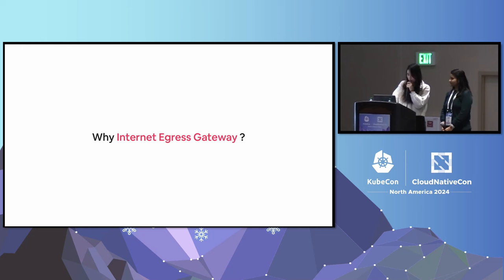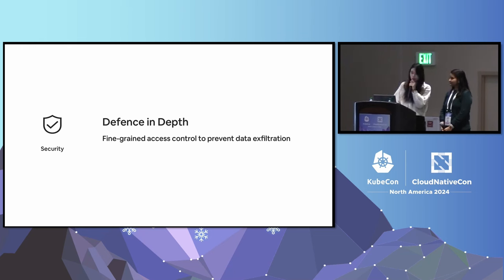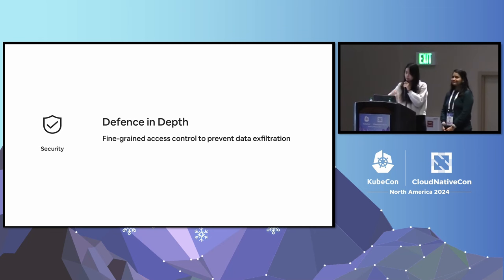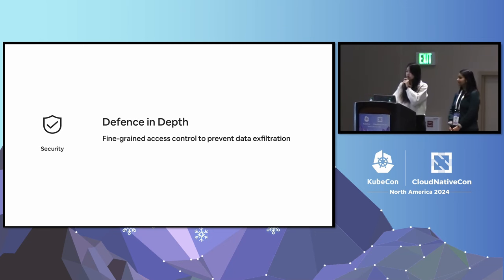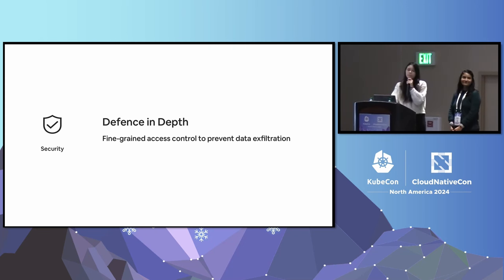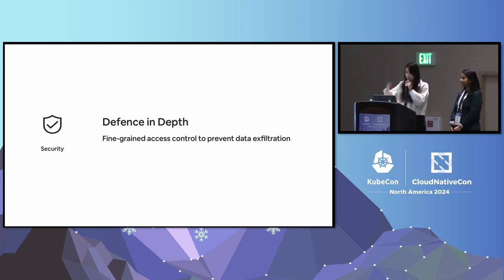Why do we need an internet egress gateway? The first reason is security. When people think about network security, we often emphasize the ingress side, but securing traffic leaving your system is also very important. For example, if we encounter vulnerabilities like log4j, you don't want attackers to exfiltrate sensitive data to malicious websites. To follow the best practice of defense-in-depth, we have multiple layers of control from traffic entering to leaving our system — building up an egress gateway helps prevent arbitrary access to the public internet, avoiding data exfiltration when a zero-day is happening.